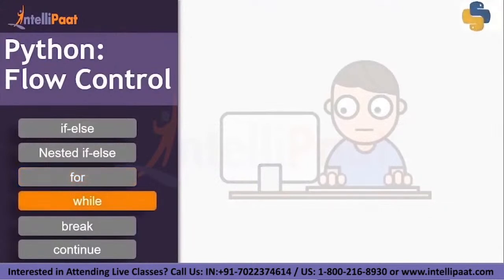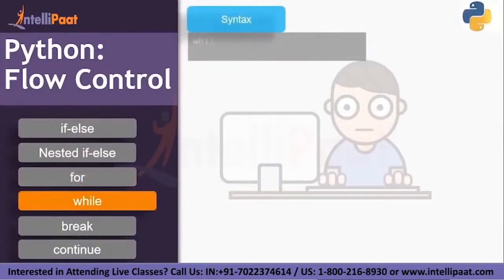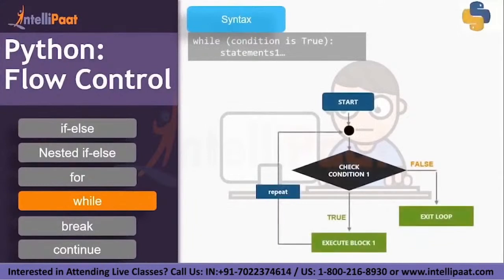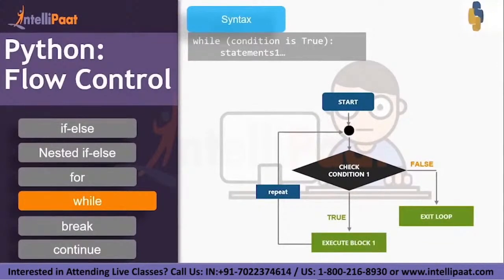Next is the while loop. The syntax for this is: while condition is true, then execute the set of statements under the while. Start, check for the condition — if it is true, then execute block one and repeat the loop until the condition is true. In case the condition is false, then just exit the loop.